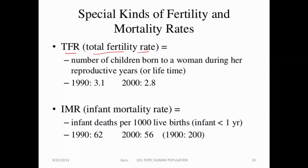The second parameter is based on the mortality rate — deaths per 1,000 live births. This is the infant mortality rate, which refers to deaths of infants under one year of age per thousand alive births in a given year.